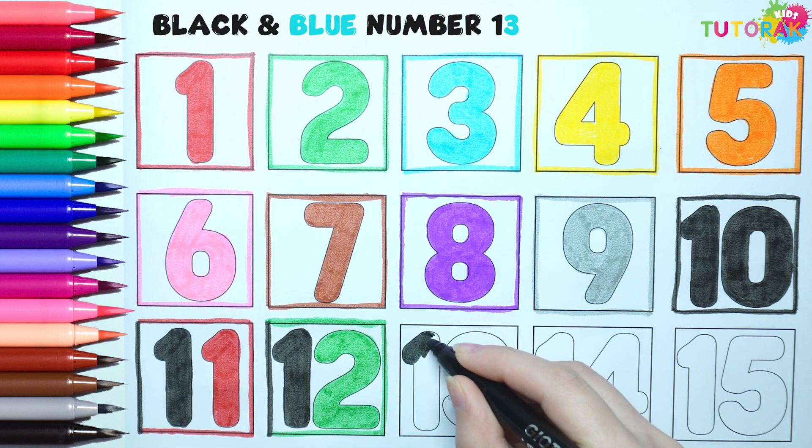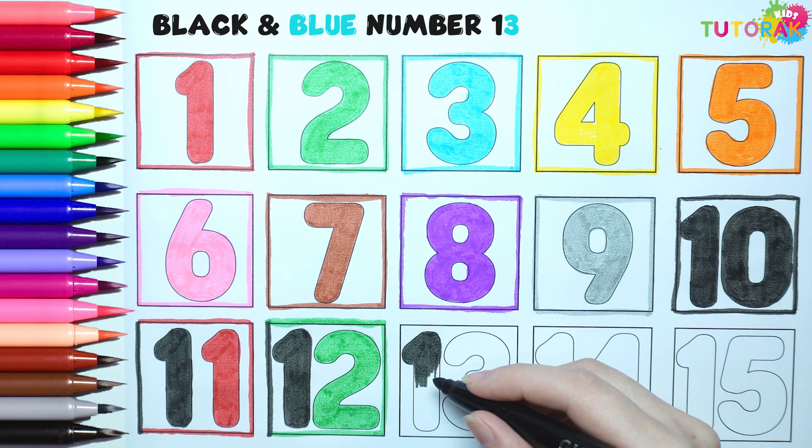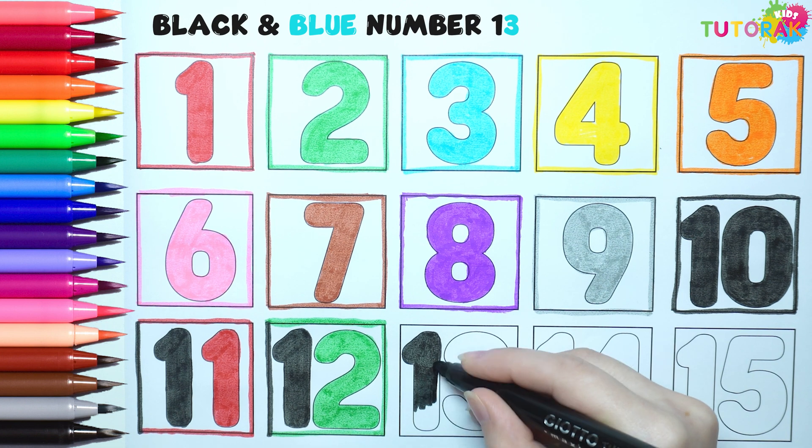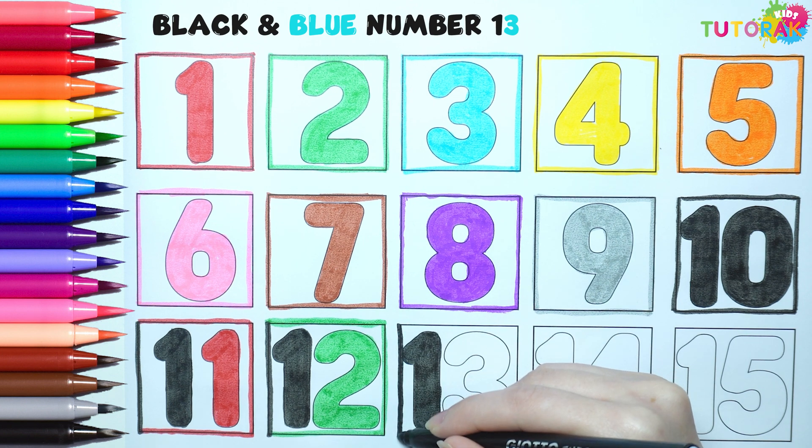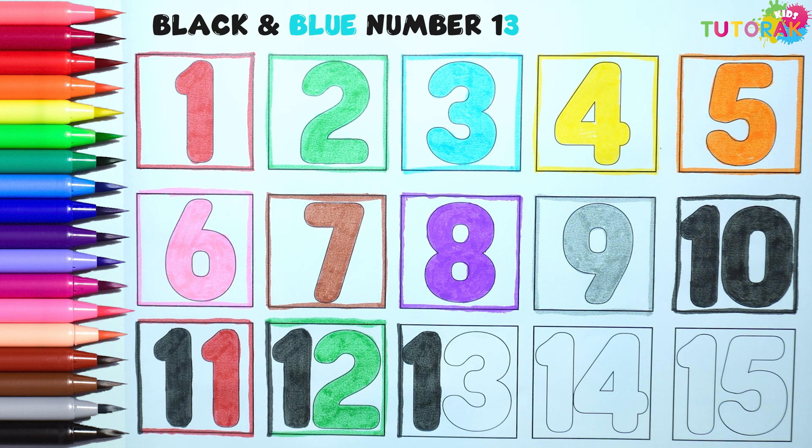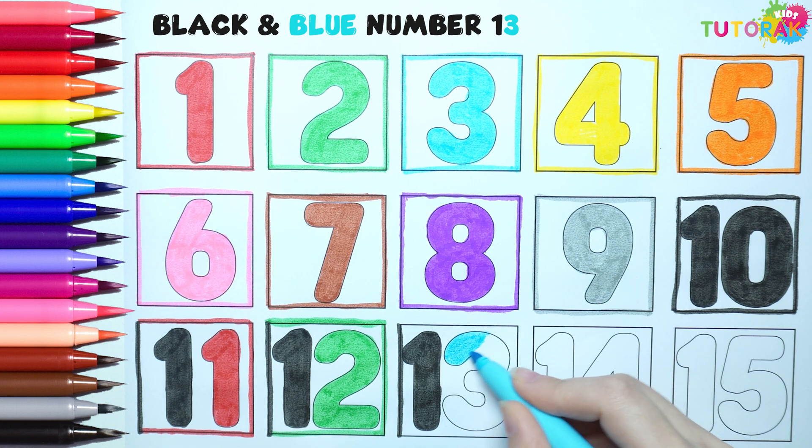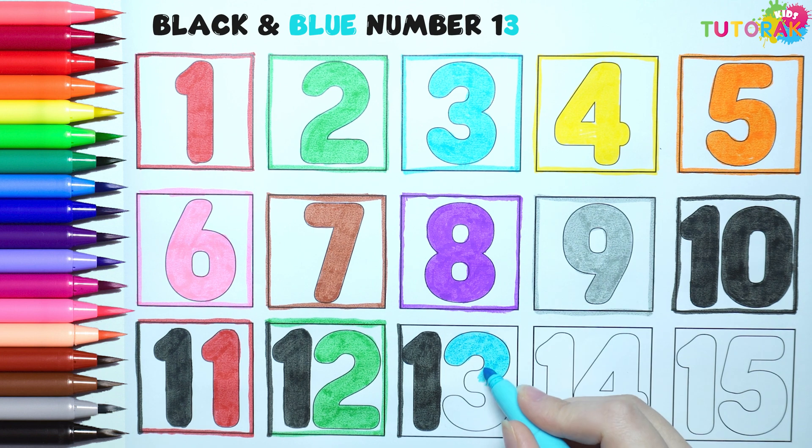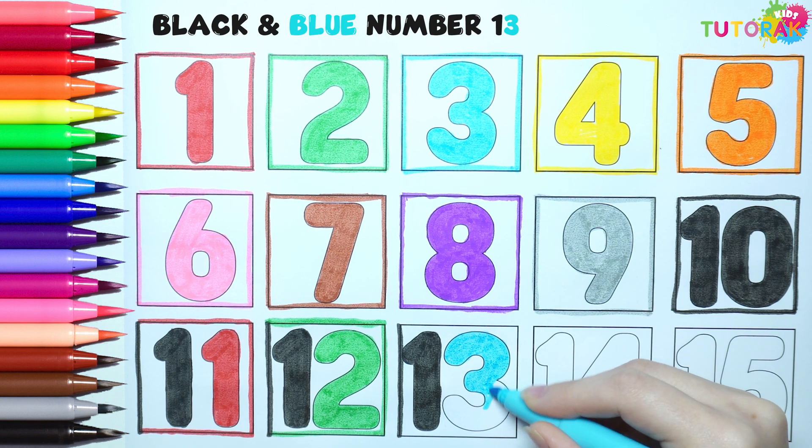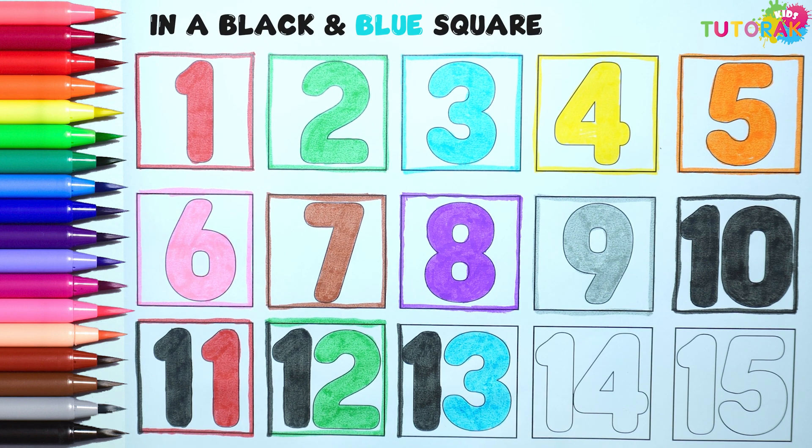10 plus 3 make 13. That's black and blue 13 in a black and blue square.